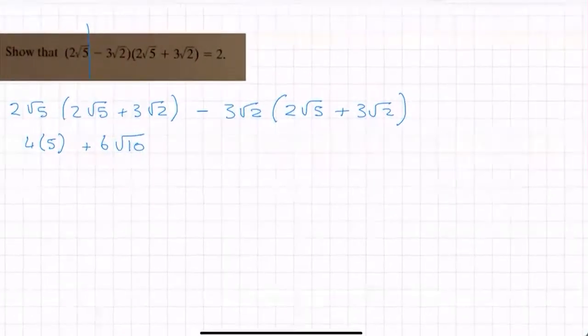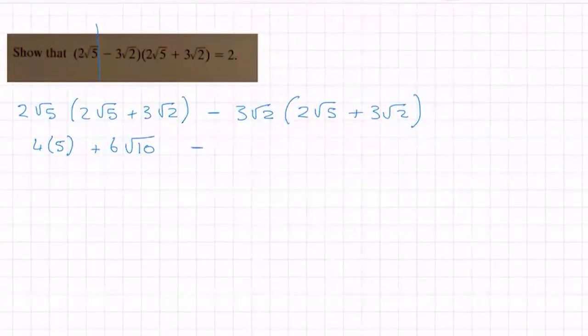If we write it down like that, minus 3 by 2 is -6, √2 by √5 is √10, and then I have minus by plus is a minus, 3 by 3 is 9.